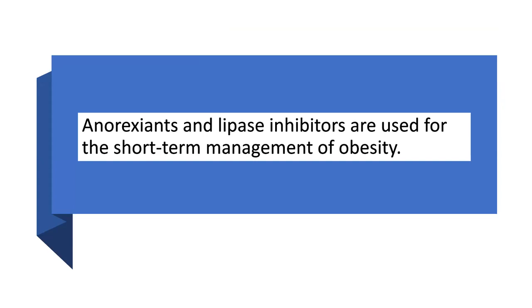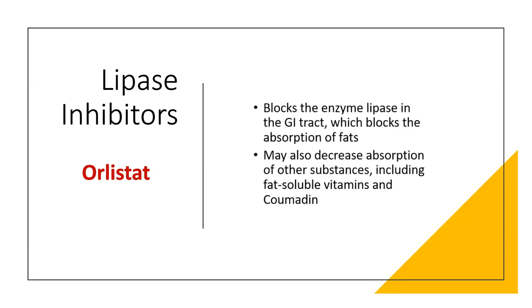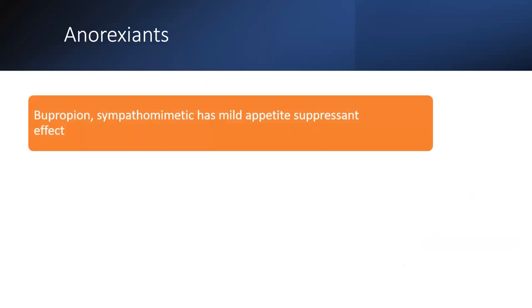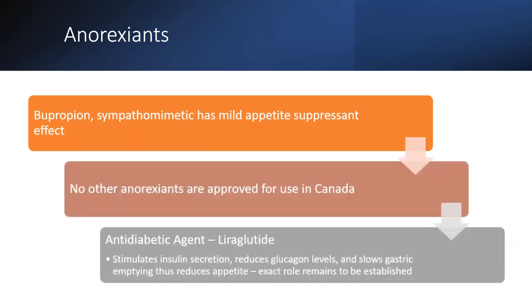For obesity management, anorexiants and lipase inhibitors are used for short-term management. Lipase inhibitors (orlistat) block the enzyme lipase in the GI tract, blocking the absorption of fats, and may decrease absorption of fat-soluble vitamins and warfarin (coumadin). Bupropion is a sympathomimetic drug with a mild appetite suppressant effect; no other anorexiants are approved for use in Canada. The anti-diabetic agent liraglutide stimulates insulin secretion, reduces glucagon levels, and slows gastric emptying, thereby reducing appetite.